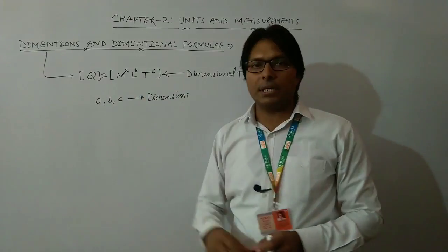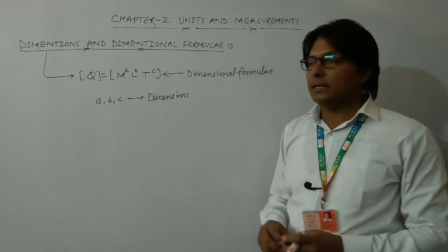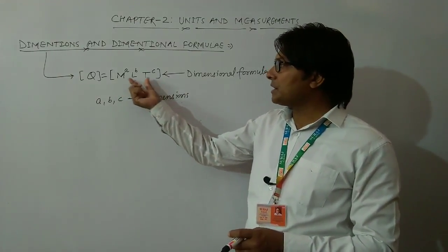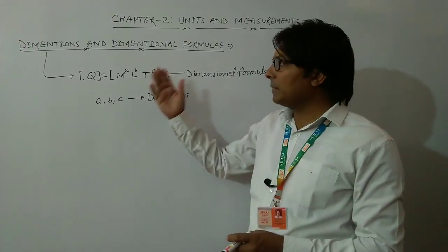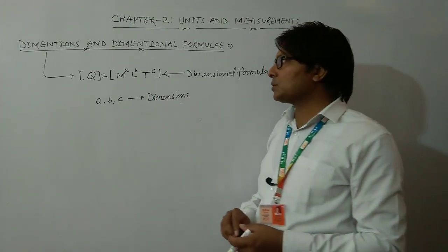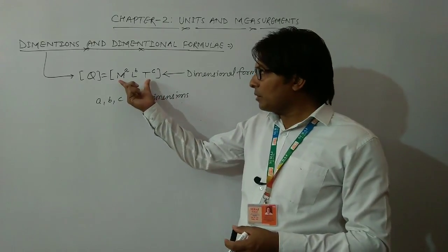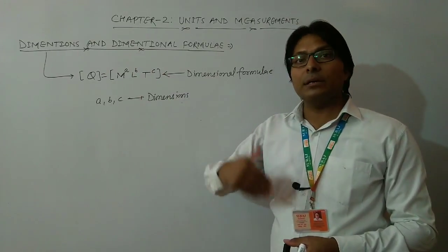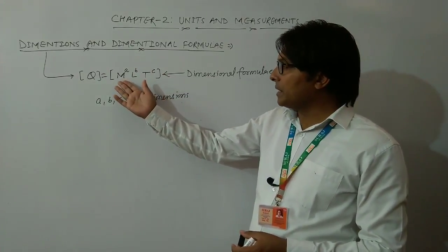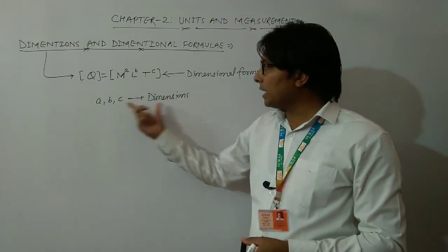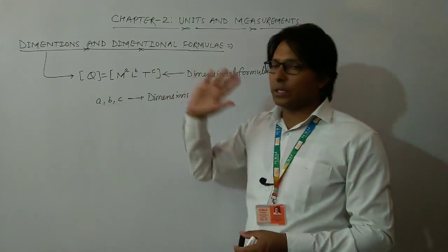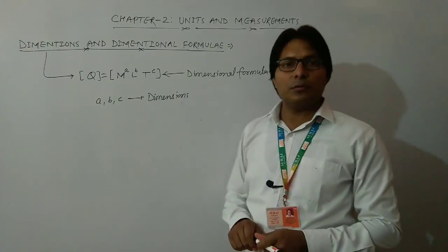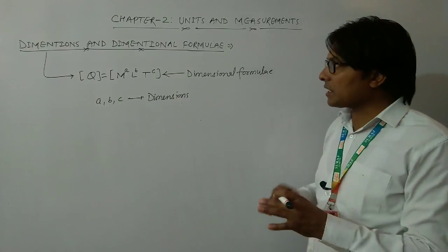So we can define it as: if a physical quantity is written in the form of powers of the base physical quantities M, L, T — or there may be other base quantities — then this formula is known as the dimensional formula, and those powers written on the base quantities are known as the dimensions of the physical quantity to be expressed.